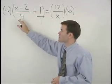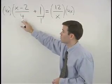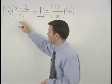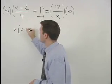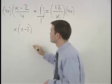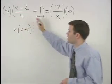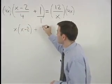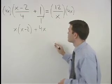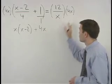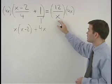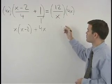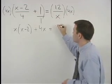When multiplying 4x times x minus 2 over 4, the 4s cancel and we have x times parentheses x minus 2. 4x times positive 1 is positive 4x. And when multiplying 4x times 12 over x, the x's cancel and we have 12 times 4 or 48.